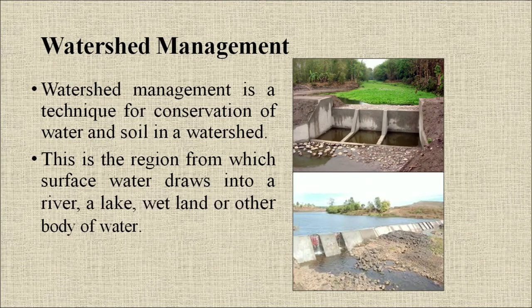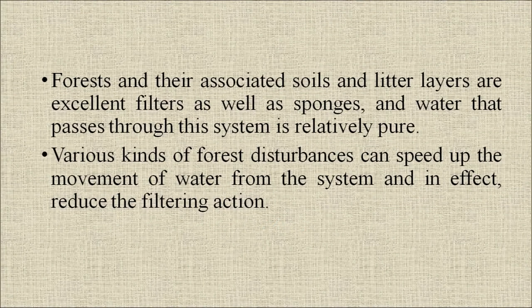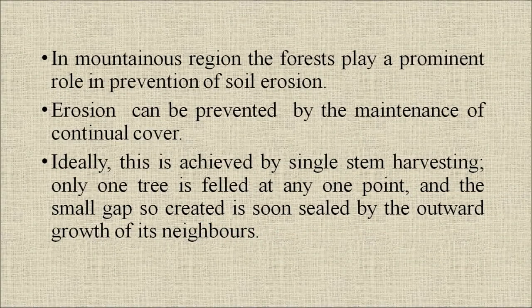Watershed management is a technique for conservation of water and soil in a watershed — the region from which surface water drains into a river, lake, wetland, or other body of water. Forests and their associated soils and litter layers are excellent filters and sponges; water that passes through this system is relatively pure. Various kinds of forest disturbances can speed up the movement of water from the system and reduce the filtering action. In mountainous regions, forests play a prominent role in prevention of soil erosion.